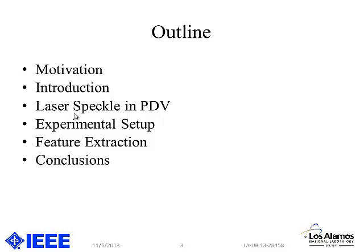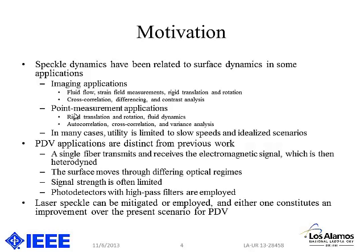PDV is an acronym for Photon Doppler Velocimetry — that's a laser symmetry diagnostic that we use in application to explosive tests to measure velocities up to several kilometers per second. I'll describe what laser speckle looks like in that regard, an experimental test bed I made to see how we could relate speckle dynamics back to surface speeds, and different features I looked at extracting from the data to get a better measure of what the surface speed actually is.